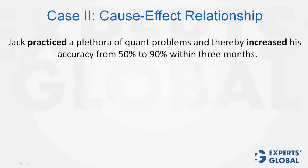For example, in this case, Jack practiced a plethora of quant problems and thereby increased his accuracy. In this case, you see that cause and effect have been separated by 'and thereby.' It's not a comma separating the cause from the effect, and therefore, this sentence requires the two verbs—practiced and increased—to be parallel. And the sentence is perfectly alright.